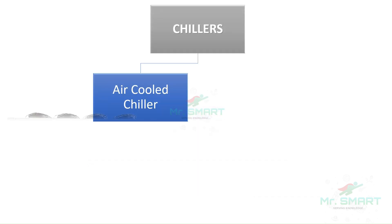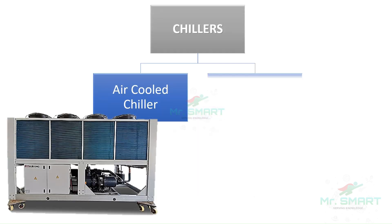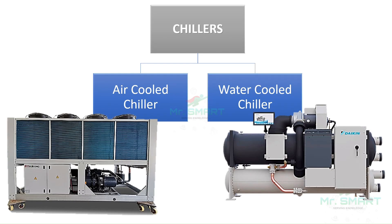Based on how the refrigerant is cooled in the condenser, there are two main types of chillers: an air-cooled chiller and a water-cooled chiller.